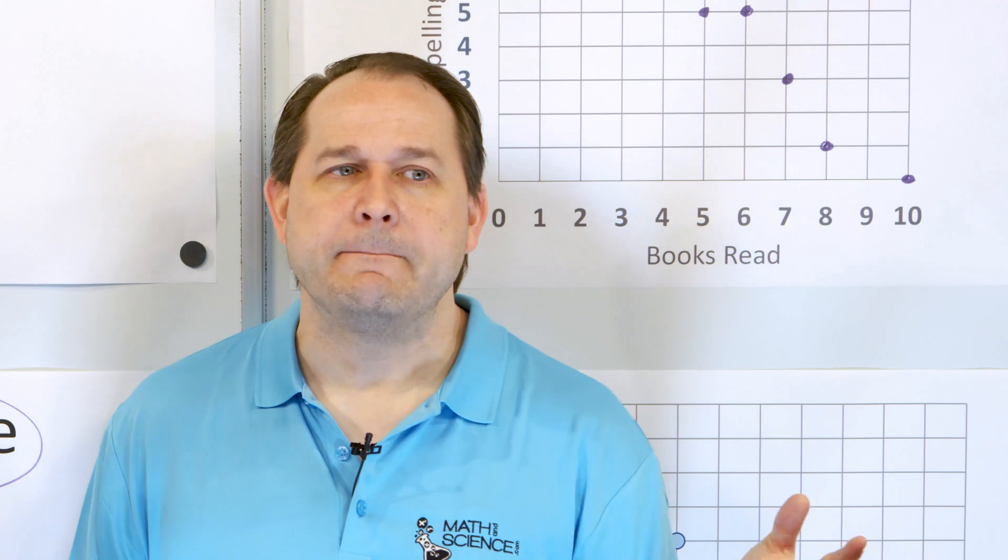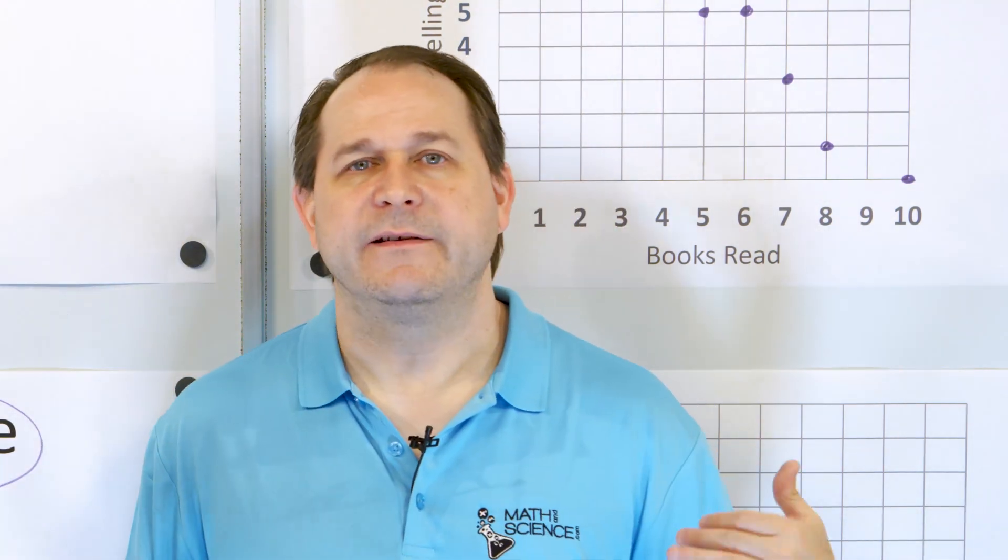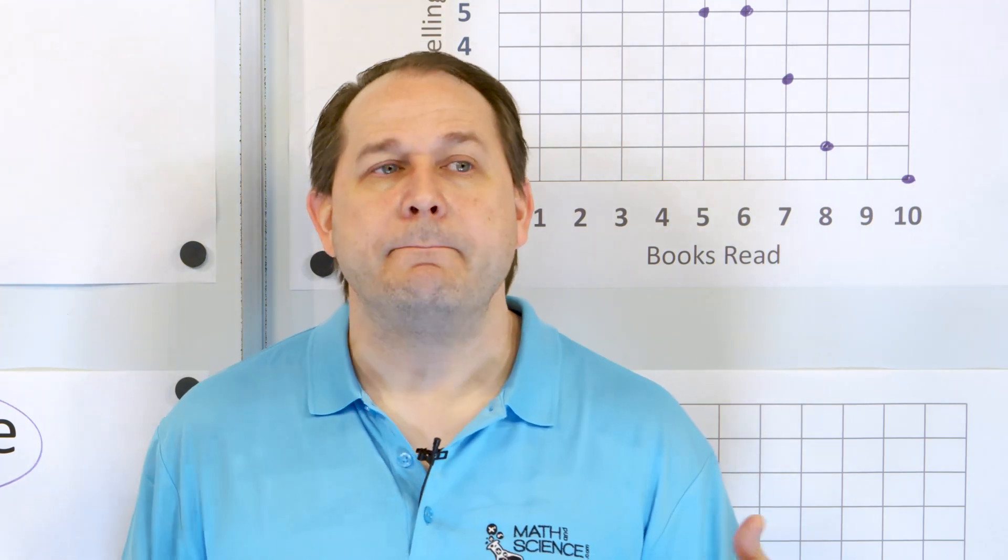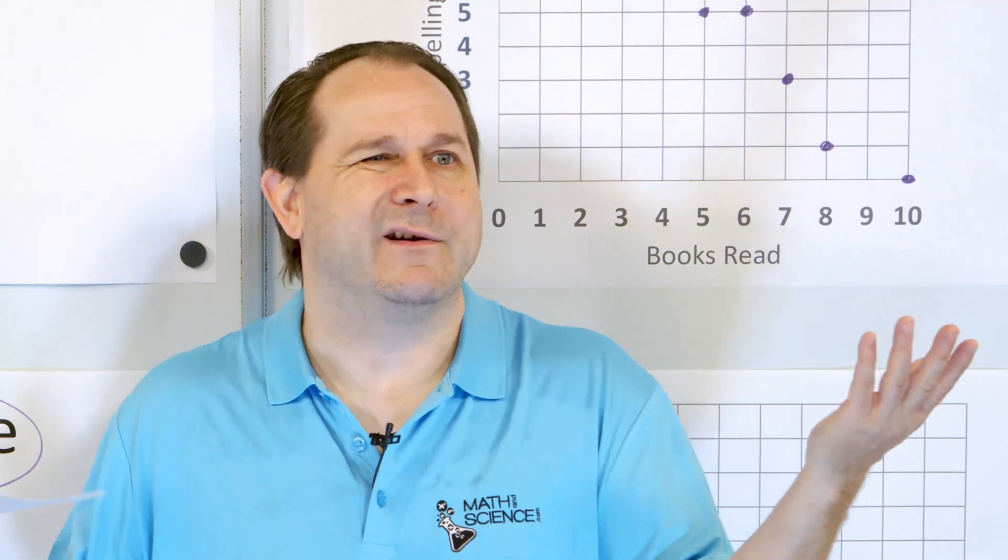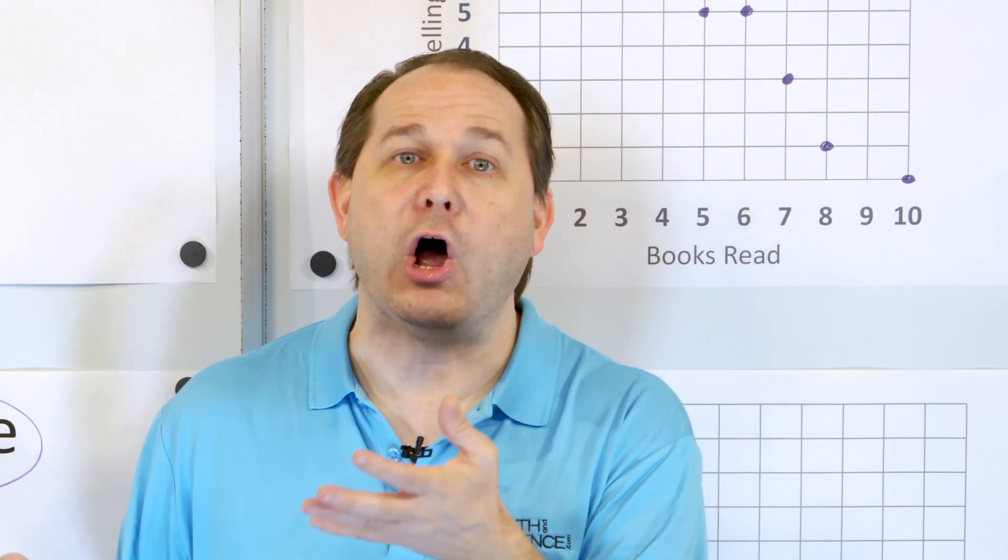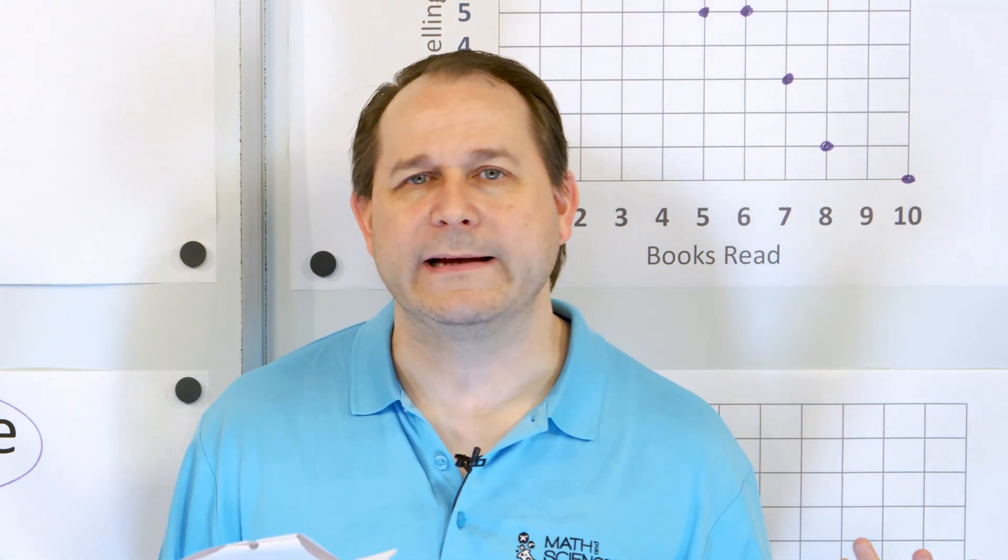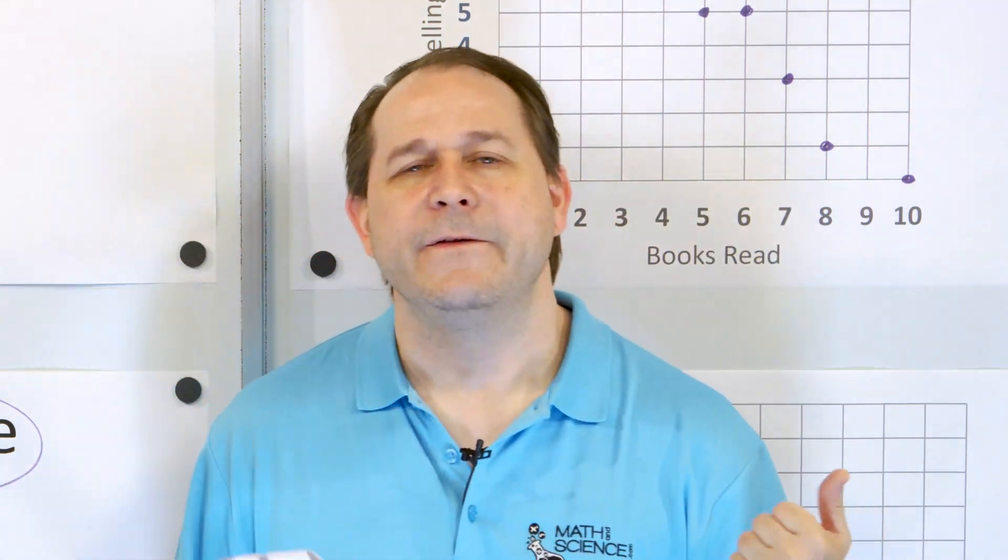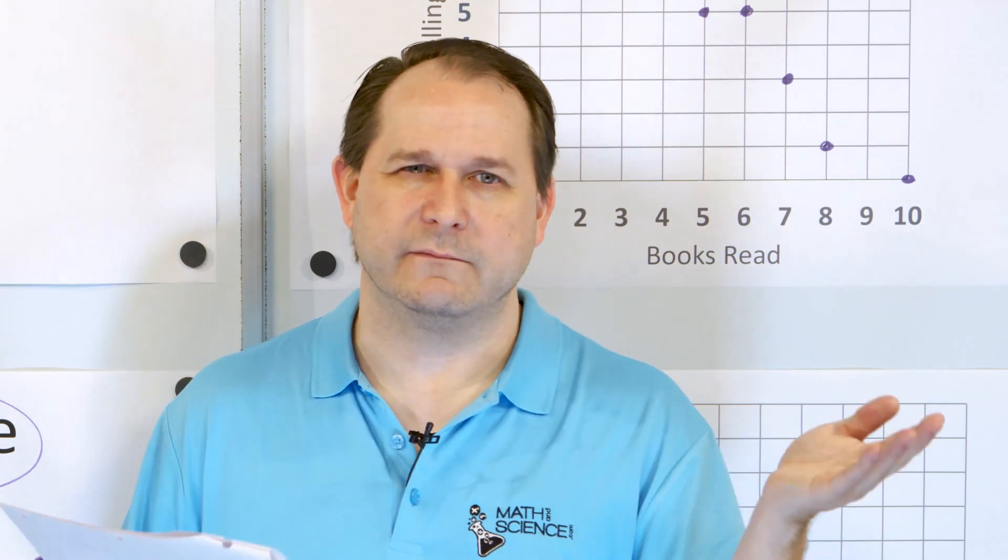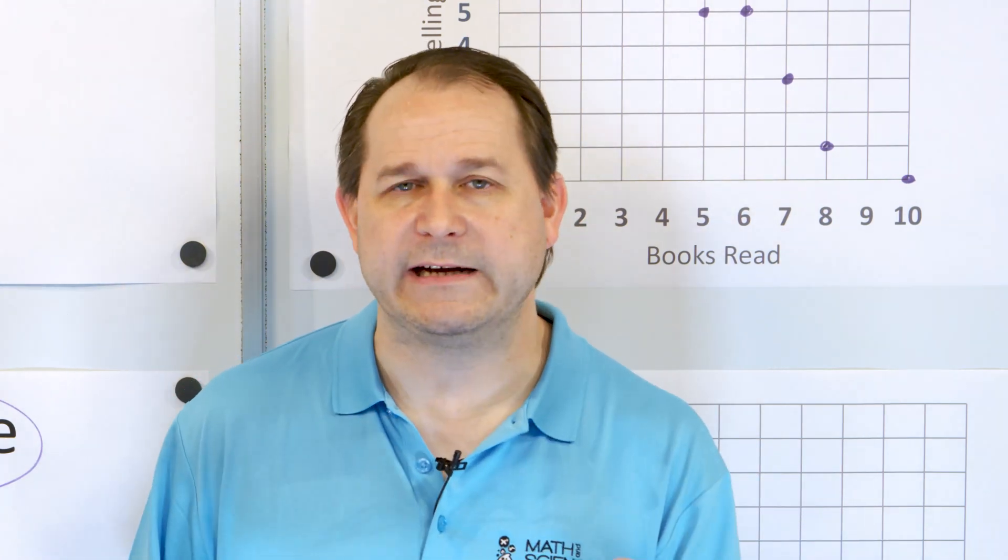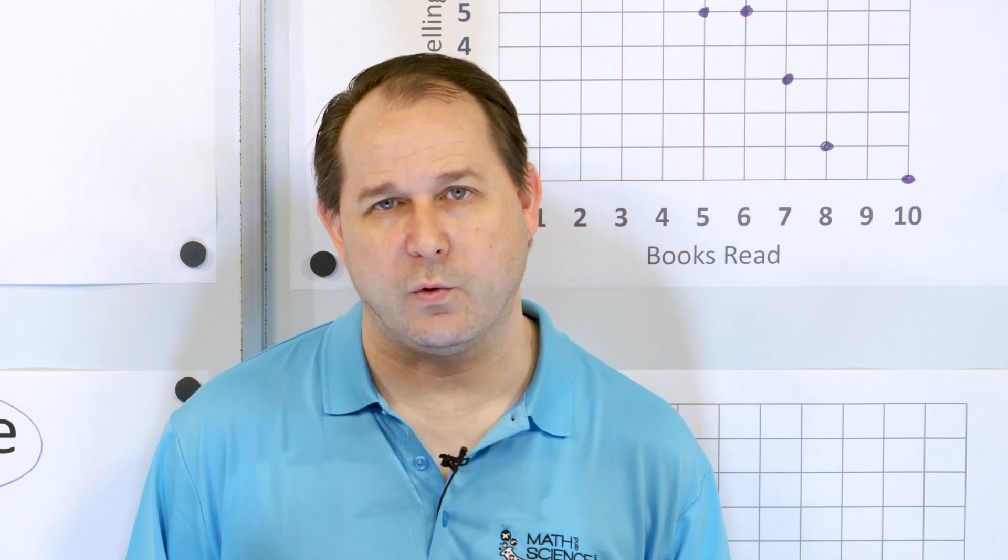There could be other factors. Maybe you do a lot of practice spelling tests. Maybe some of these people that get low spelling errors—maybe the people that read more books also enjoy spelling, crossword puzzles or something. So it might be that the people who are bookworms also enjoy learning how to spell correctly, and so they both go down like this. You don't really know what's causing what, but you know that they're correlated, and they're very strongly negatively correlated.